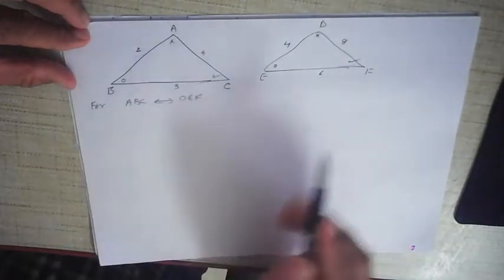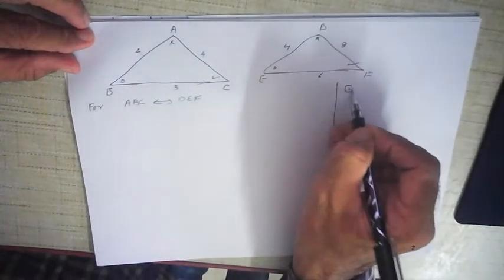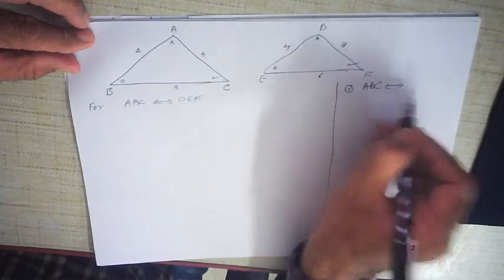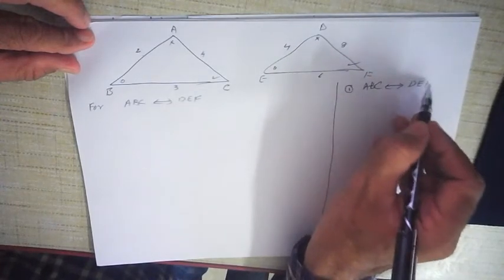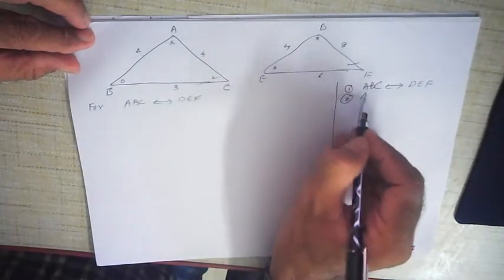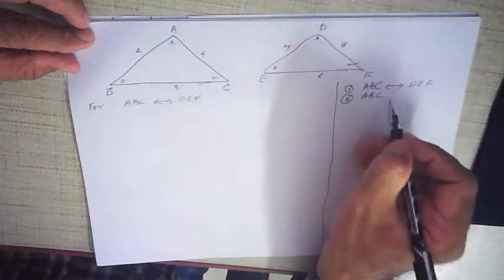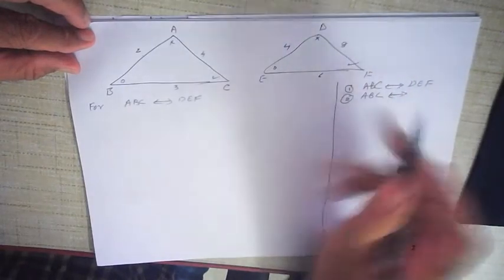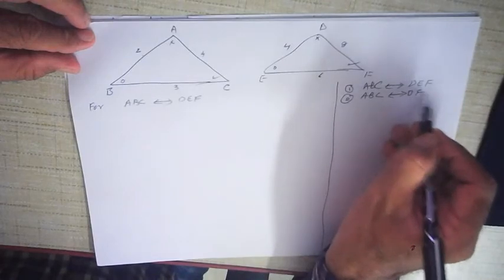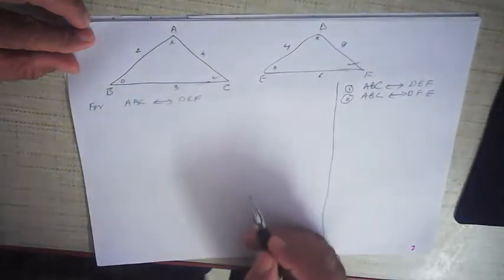There are different correspondences possible. First of all, ABC correspondence DEF. The second one is keep ABC as it is — no change in this triangle — but there is a slight change in the order of the vertices. I kept D as it is, but I have changed F and E. This becomes a different correspondence.